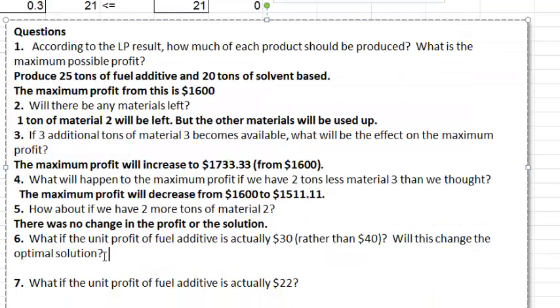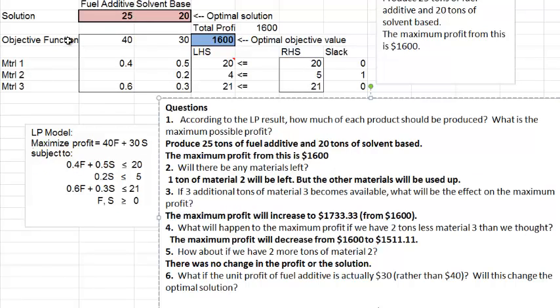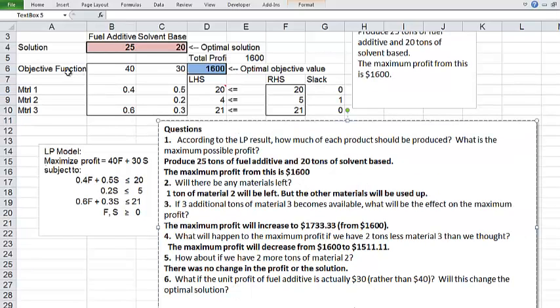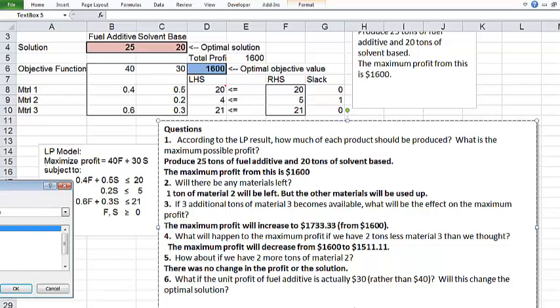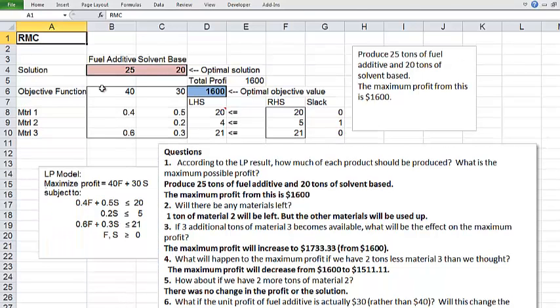Question 6. What if the unit profit of fuel additive is actually $30 rather than $40? Will this change the optimal solution? The unit profit of fuel additive is over here, $40. So what if the unit profit is decreased from $40 to $30? That would mean the fuel additive yields less profit than before. So maybe making a lot of fuel additive might not be as attractive as before. But it also depends on the constraints. So again, I'm going to make a copy of it and make the change there.